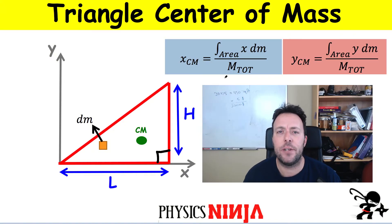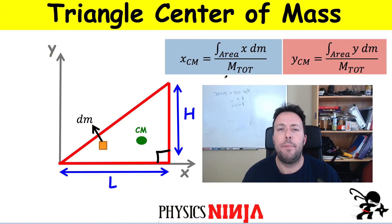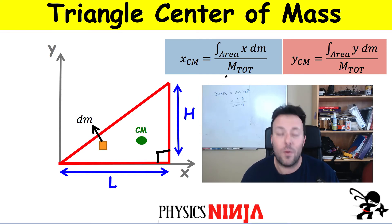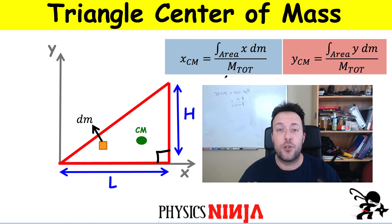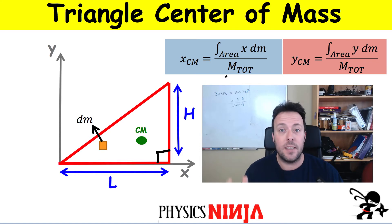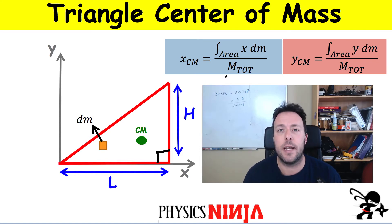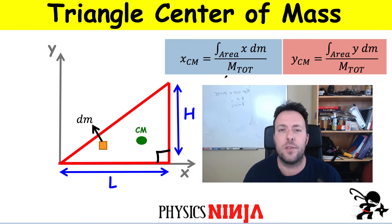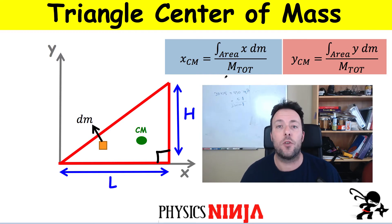Hi everybody, Physics Ninja here. Today we're going to evaluate the position of the center of mass for a right angle triangle. The mass is uniformly distributed, so constant density. Let's see how we set up the equations to find the X and the Y position of the center of mass for this right angle triangle.